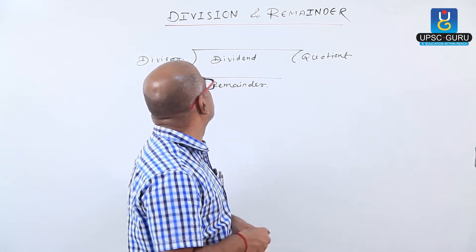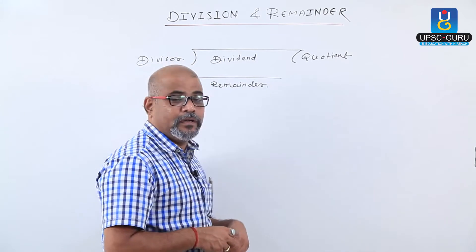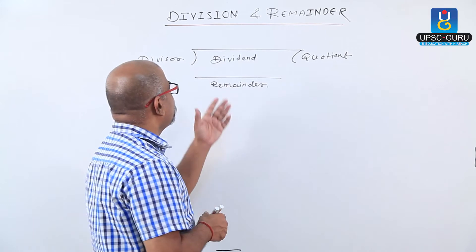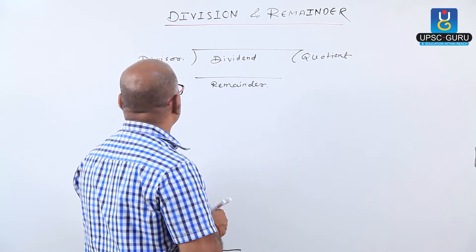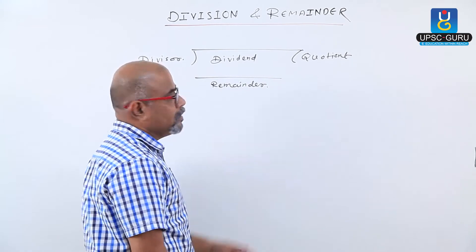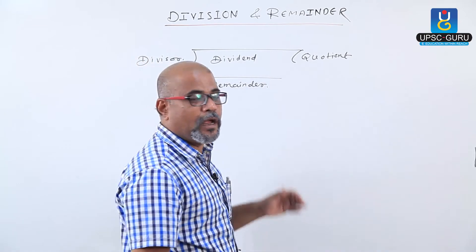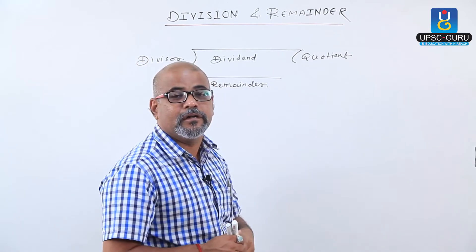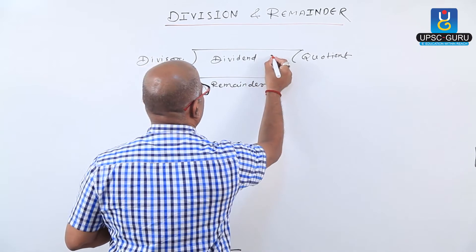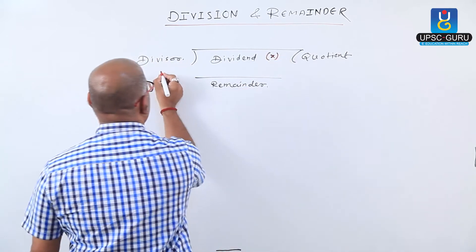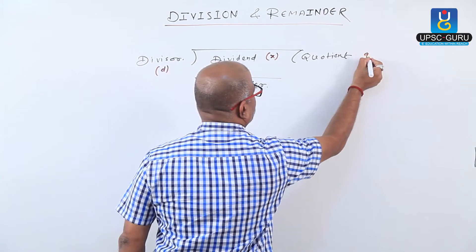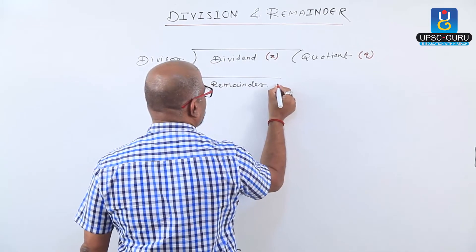Hello. The next topic is division and remainder and applications of them. All of us know that when a dividend is divided by a divisor, the answer we get is called the quotient and the number left over is called the remainder. Let us consider the dividend represented by the letter X, the divisor as D, the quotient as Q, and the remainder as R.